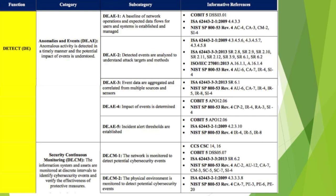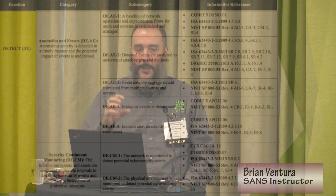For detection, we're shifting from blocking to noticing when bad things happen. We want to check anomalies and understand what's going on — this could be our intrusion detection systems. If you have intrusion prevention systems, they're technically in the Protect arena, but they may have detection rules turned on. An IPS and an IDS are the same system deployed in a different place with different rules. You could have them running both detection and protection. We also do continuous monitoring on our network.